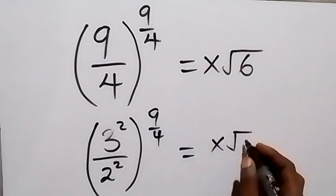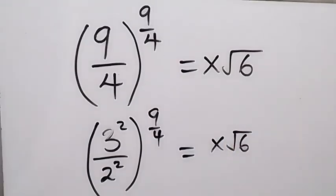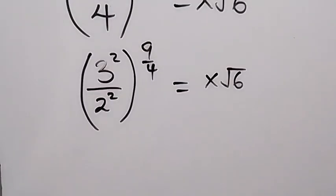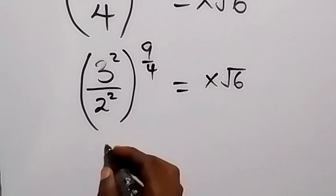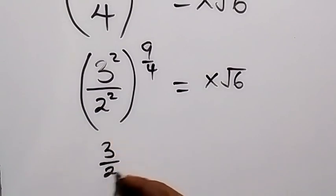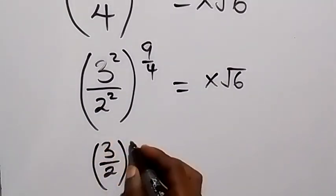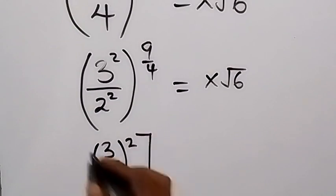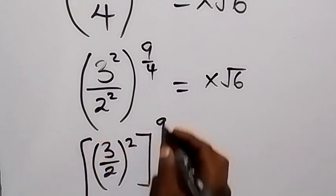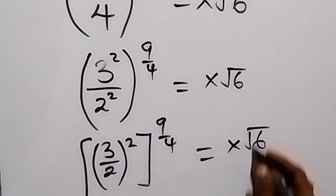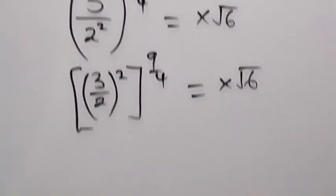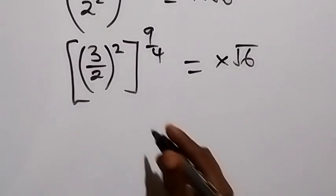From here we can bring this power of 2 out using the law of indices — when we have the same power we can bring it out — and this will be 3 over 2, all raised to power 2, then raised to power 9 over 4, equals x root 6.